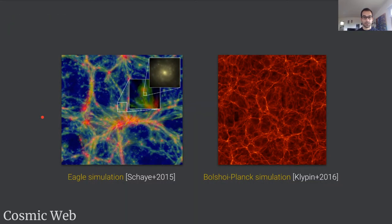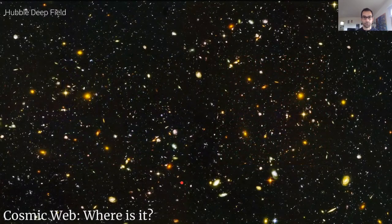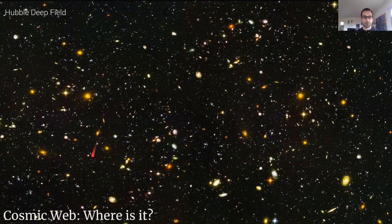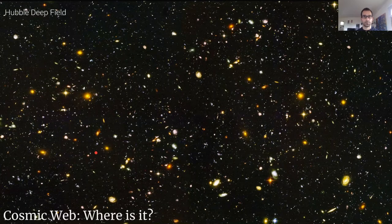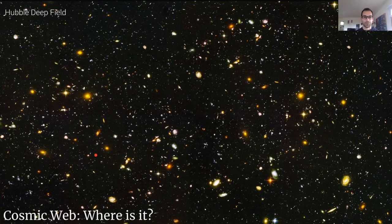Since then the cosmic web was detected by other simulations, for instance the Eagle and Bolshoi-Planck simulations in recent years. But when it comes to real observed data it's very difficult to see the cosmic web. Here is a picture produced by Hubble and you can see individual galaxies here but you cannot really see any cosmic web.